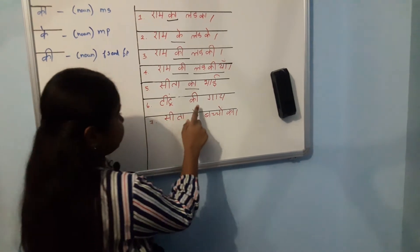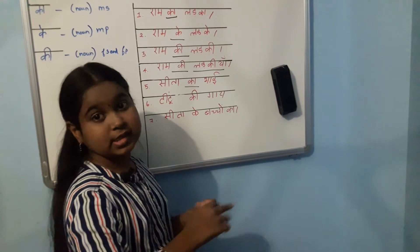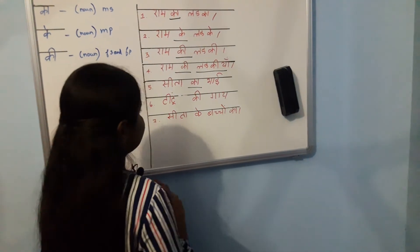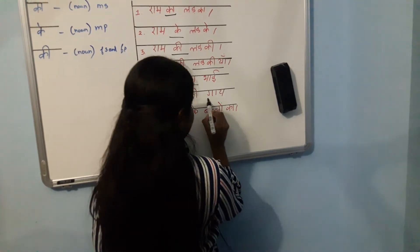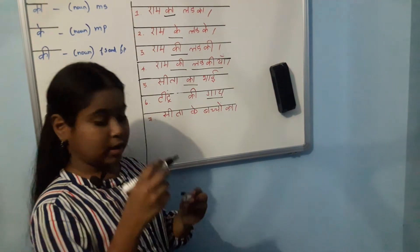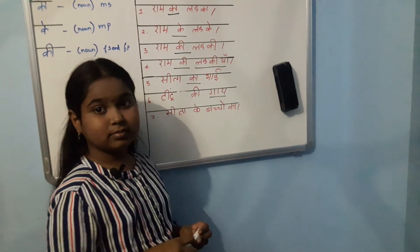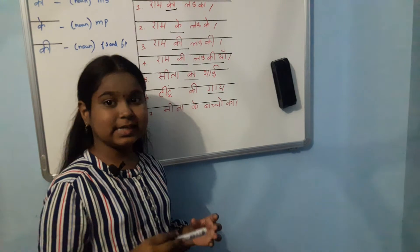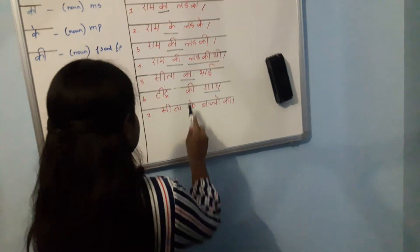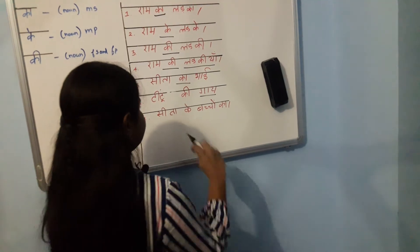Next: Tintu Khi Gai. Here 'Gai' (cow) is feminine singular. So the possessive case ending used here will be 'Khi'.